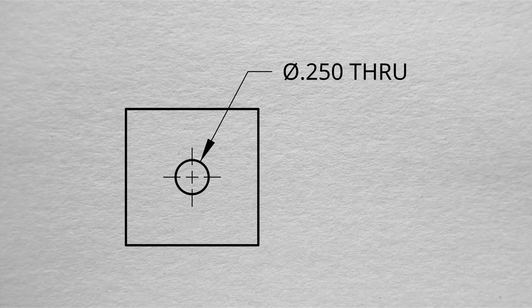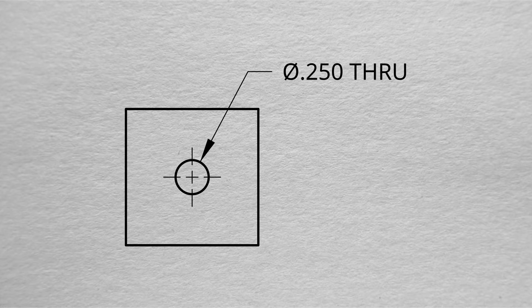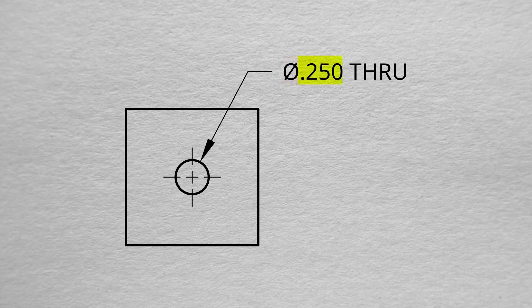The first one we have here is a through hole. We're going to take a notice of a couple of things here. First, there's going to be a circle with a slash through it. That indicates diameter. The number that appears directly after that symbol is going to be the size, or the actual number of the diameter of the circle.